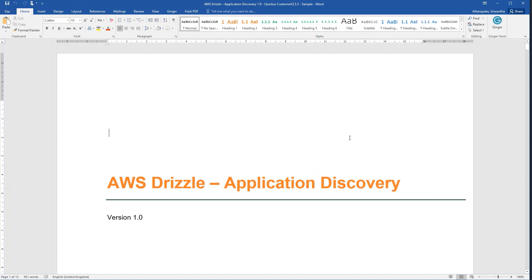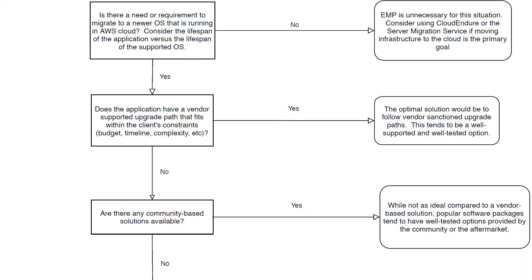That way you have a proper plan in place to modify these applications and bring them into a new operating system. Once you identify your application portfolio along with the servers and the legacy Windows applications you are going to migrate into the cloud, you need to ask a few questions to decide whether this application is suitable for the migration approach and tooling we are going to discuss.